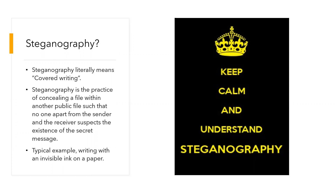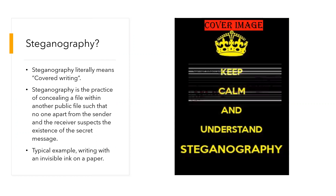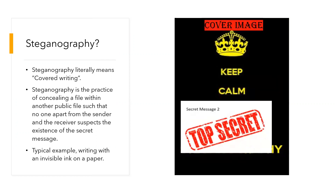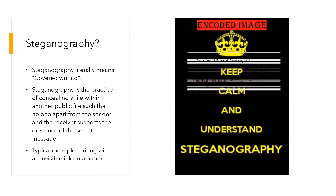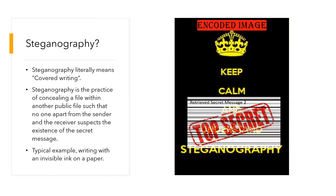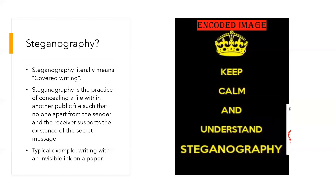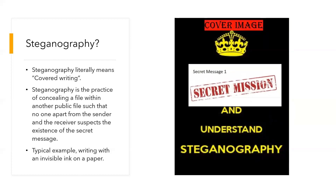A very famous example is when you write with invisible ink on a paper. It has been used in world wars. To explain this process better, as you can see on the right, we initially choose a cover image. We embed secret messages inside the cover image. Once this embedding is done, it is called an encoded cover image, which is passed to the retriever. The retriever then retrieves the secret messages. In this entire process, this encoded cover image is supposed to look exactly the same to avoid suspicion.